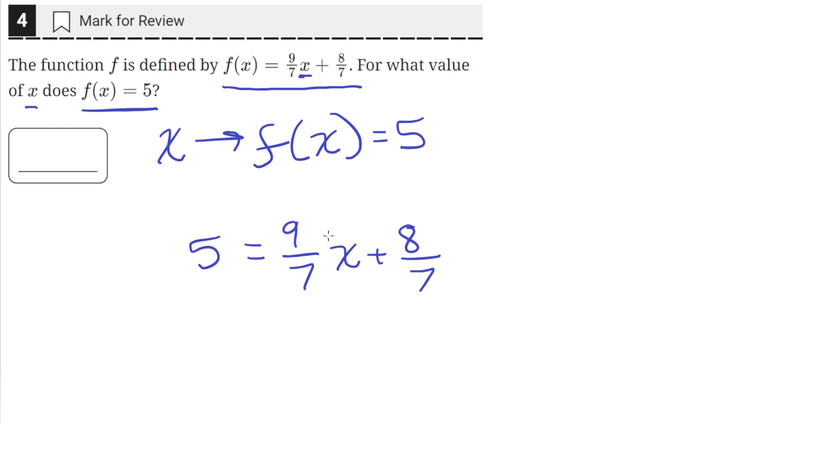Let's start by multiplying both sides by 7. On the left hand side we'll be left with 35. And on the right hand side the 7's in the denominator will cancel out since we multiplied them by 7, so we'll be left with 9x plus 8.